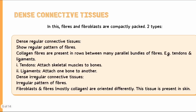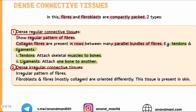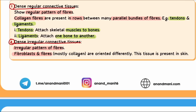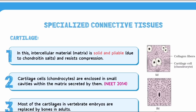Dense connective tissue has fibers and fibroblasts that are compactly packed and tightly arranged. There are two types: dense regular connective tissue (fibers arranged in a regular pattern in parallel bundles — examples are tendons, which attach muscles to bone, and ligaments, which attach one bone to another) and dense irregular connective tissue (fibers are irregularly/randomly oriented, present in skin).